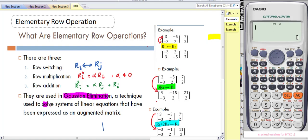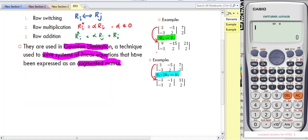We use ERO in Gauss-Jordan elimination for solving systems of linear equations. We must express it as an augmented matrix.